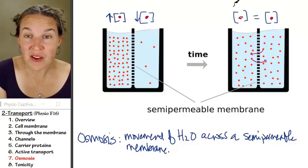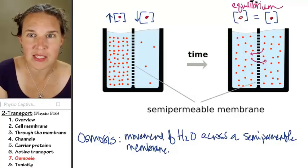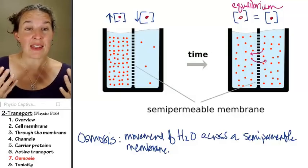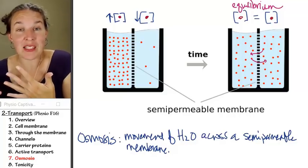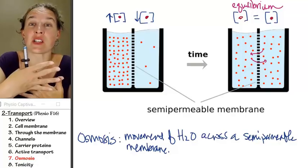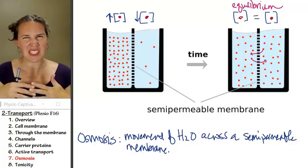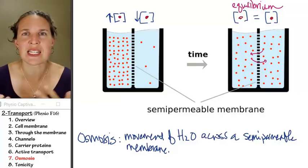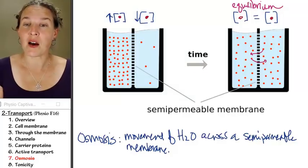They're at equilibrium. Equilibrium just means that the movement in one direction is the same as the movement in the other direction, which means the net movement is zero.